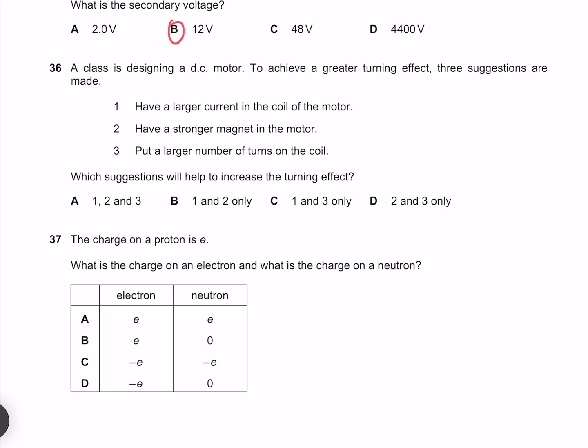A class is designing a DC motor. To achieve a greater turning effect, three suggestions are made: Have a larger current in the coil of the motor, which will work. Have a stronger magnet in the motor, which will also work. And put a larger number of turns on the coil, which will also have this effect. Our answer must therefore be A, 1, 2 and 3.